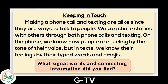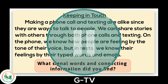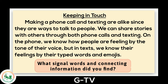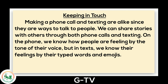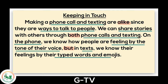What signal words and connecting information did you find? Pause the video to discuss. Let's see if you found everything. Here's the first signal word — 'alike' — and this is the information it connects to. The next signal word is 'both,' and here's the connecting information. 'But' is the final signal word, and it connects to this. Highlighting the signal words lets us see that the overall text structure is compare and contrast.